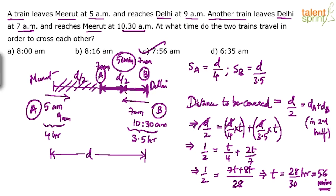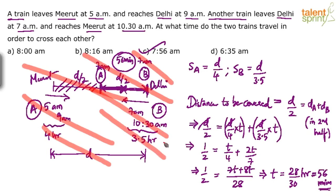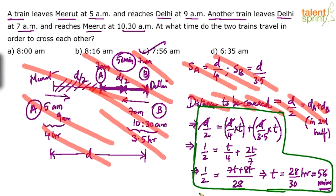Please do not be put off by the length of the explanation — this is a very typical question type from time and distance. When solving on paper, you don't need the diagram or all these steps. Mentally: first train takes 4 hours, second takes 3.5 hours, second started 2 hours late, so half the distance is already covered. You actually start writing from the equation D/2 = (D/4)×T + (D/3.5)×T, and you get the answer 7:56.